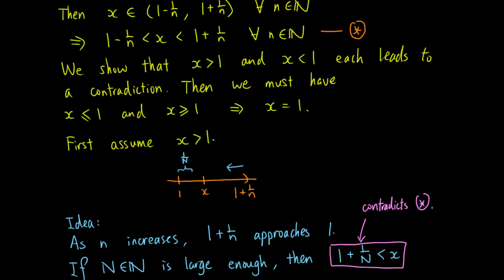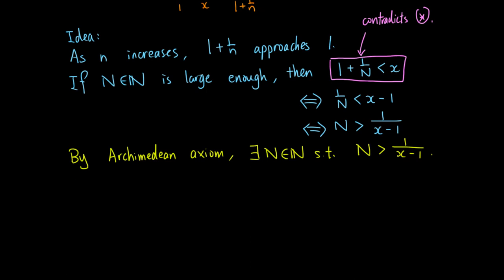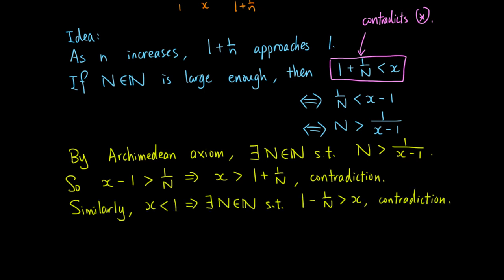Now, 1 + 1/n is less than x holds if and only if 1/n is less than x - 1, which holds if and only if n is greater than 1/(x - 1). Again, we can find such an n by the Archimedean axiom. So we obtain that x is greater than 1 + 1/n, which is the contradiction we wanted. Similarly, if we assume that x is less than 1, then we can find an n such that 1 - 1/n is greater than x, another contradiction. So we must have x equals 1, meaning x is in the set {1}, which completes the proof.